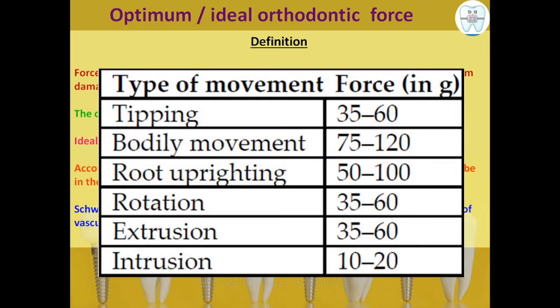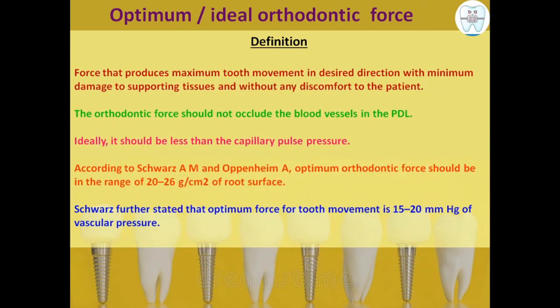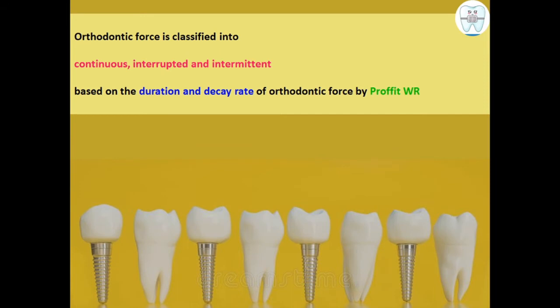For different types of tooth movement, the required forces are: tipping — 25 to 60 grams; bodily movement — 75 to 120 grams (the highest); root uprighting — 50 to 100 grams; rotation and extrusion — 35 to 60 grams; and intrusion requires the least force at 10 to 20 grams.